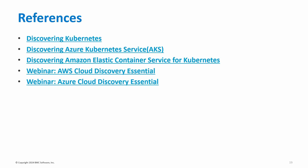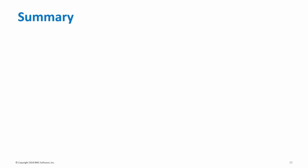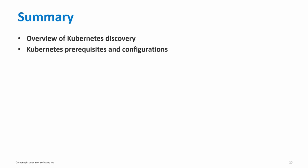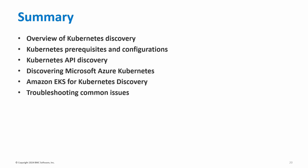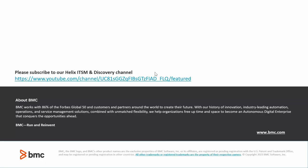Here are the references to the topics we discussed today. The first link is about how to discover Kubernetes when it is on-prem. The second link is about Azure Kubernetes service scanning. The next link is about Amazon EKS scanning. The last two are references about the webinar on AWS and Azure cloud scanning. Now let's summarize: we started with an overview of Kubernetes discovery, then showed how to configure the prerequisites for scanning Kubernetes, discussed how to discover Kubernetes deployed on-prem, talked about scanning cloud Kubernetes services such as Azure Kubernetes service and Amazon EKS, and then discussed how to troubleshoot some common issues. With this, I am concluding this webinar.